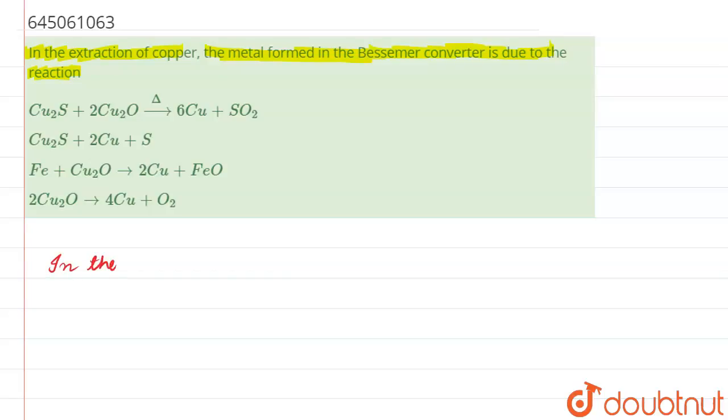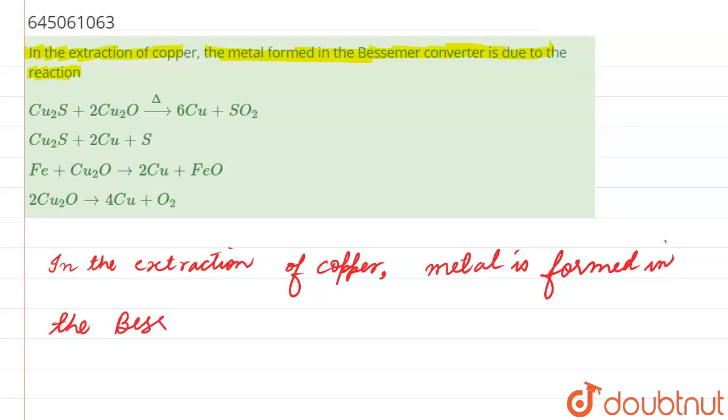In the extraction of copper, metal is formed in the Bessemer converter due to self-reduction.